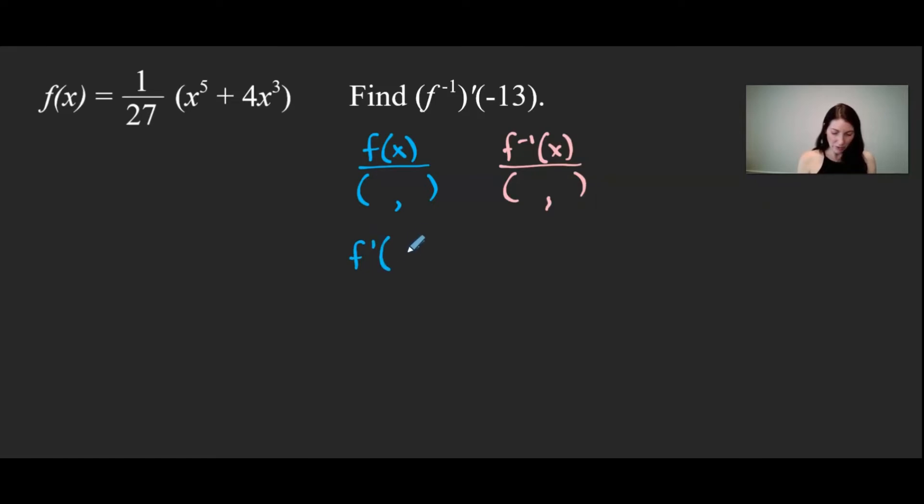And I always know that I'm going to take the derivative at whatever x value we have for the function. In this case it's what we're actually being asked to find. We are asked to find the derivative of the inverse function at the x value of negative 13. Now we always find derivatives at x coordinates or at x values. So I know for the inverse function my x coordinate has to be negative 13. And the relationship between a function and its inverse is that the x coordinate of its inverse is actually the y coordinate of the original function.